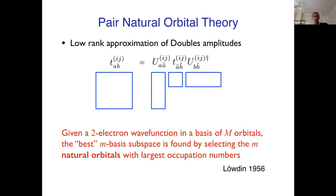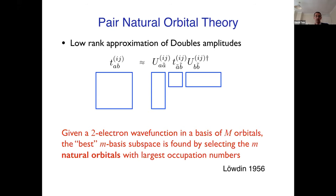So how do you go about choosing what those orbitals are? In pair natural orbital theory, this comes from this observation that goes back to Löwdin who said that for a two-electron wave function in a basis of m orbitals, you can find a subspace of small m functions that is optimal by selecting the natural orbitals with largest occupation numbers. I'm going to talk you through a little bit about where that comes from, what he did. It's basically the best overlap.